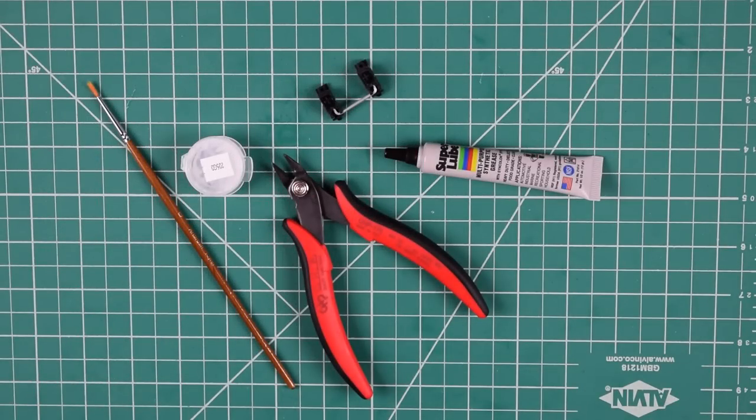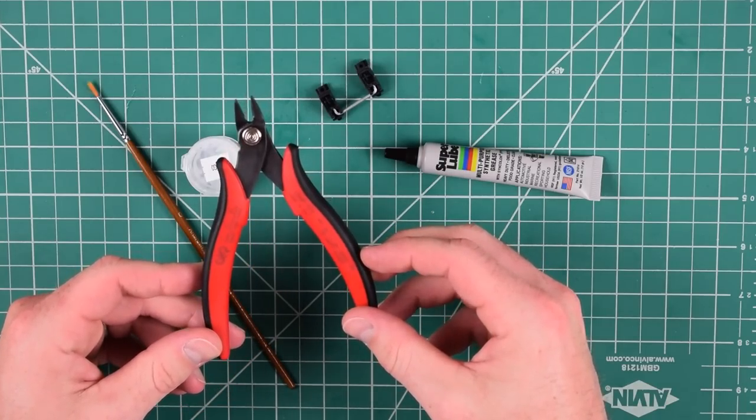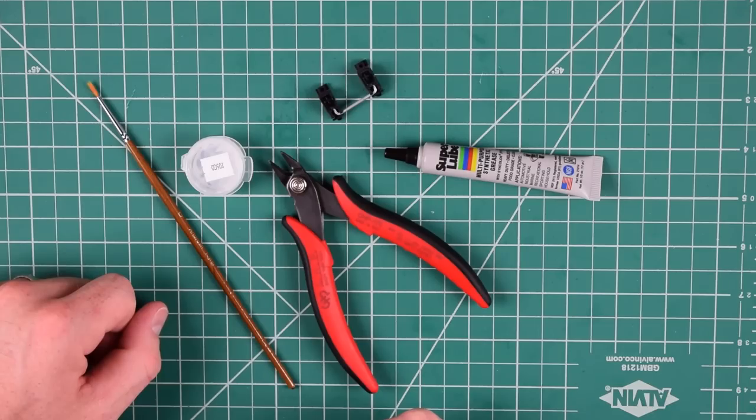Let's take a look at the components you'll need to begin stabilizer tuning. First, you'll need a pair of wire cutters. You'll use these to clip the bottom stems on the stabilizer itself. You'll also need a paintbrush. I use number zero, but many paintbrushes will work.